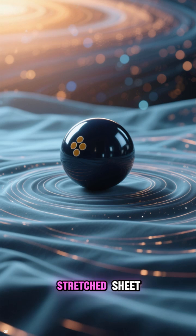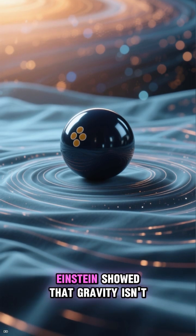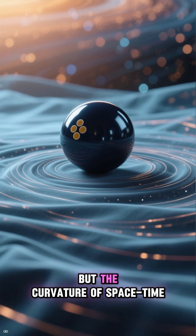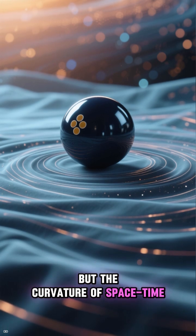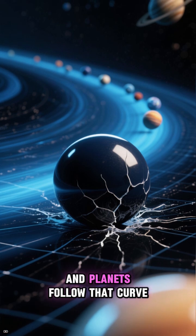Visuals of a ripple in a stretched sheet, like a bowling ball on a trampoline. Einstein showed that gravity isn't a force, but the curvature of space-time. A massive object like the sun creates a dent, and planets follow that curve.